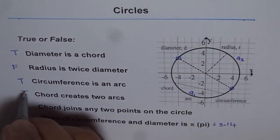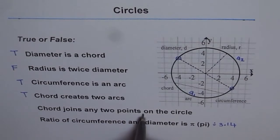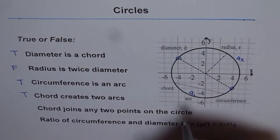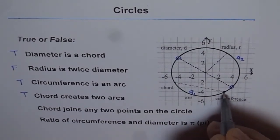Chord joins any two points on the circle. So that is true. The two points should be on the circle. Any two points, if you join it, becomes a chord. So that is true.